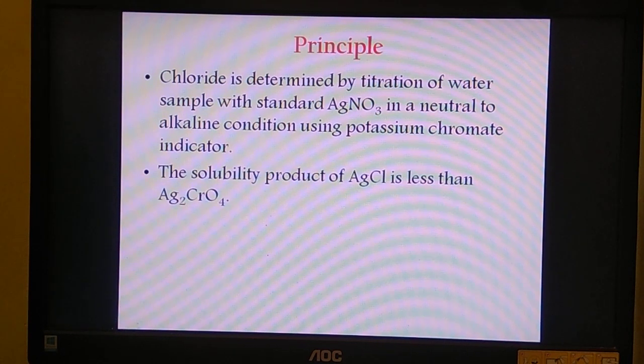The solubility product of AgCl is less than silver chromate. Solubility product, represented by the symbol Ksp, indicates the ability of a sample to precipitate out from its solution. Lower the value of solubility product, greater is the ease of precipitation. Now, when silver has a chance to combine with chloride or to combine with chromate, it preferably combines with chloride and not with chromate, because it can easily precipitate out in the form of silver chloride rather than silver chromate.